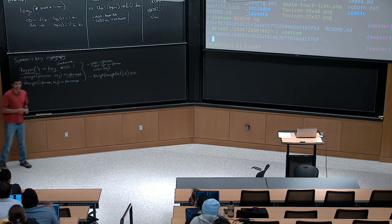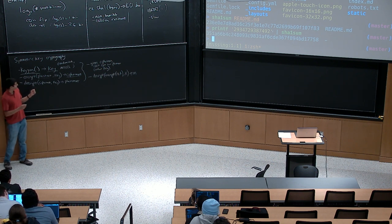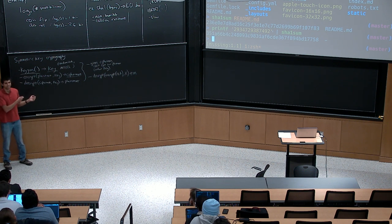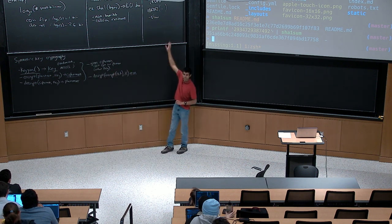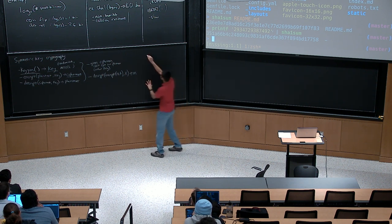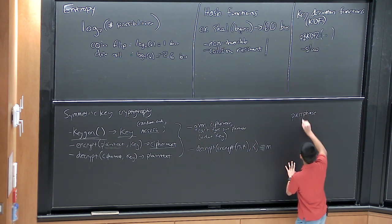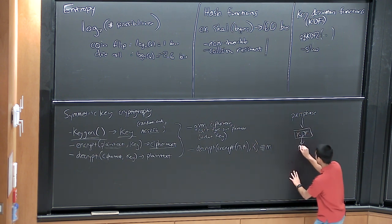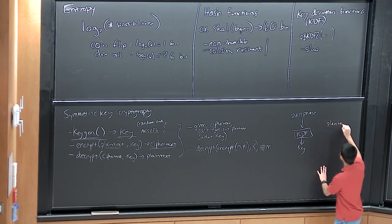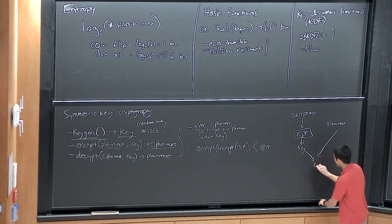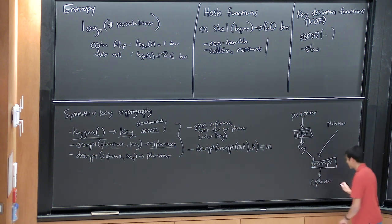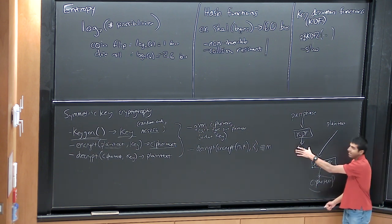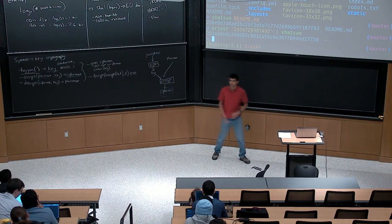An excellent question: what if you lose your key? If you lose your key, you're stuck — you need your key to decrypt, that's kind of the point. But you can combine symmetric key cryptography with key derivation functions. Instead of having a randomly generated key, you can have a passphrase and pass it through a key derivation function to get your key. Take your plaintext, combine it with the derived key in the encrypt function to produce ciphertext, store it on the web service. Now you don't need to save the key — you just remember your passphrase, and whenever you need your key you can reconstruct it from the KDF.